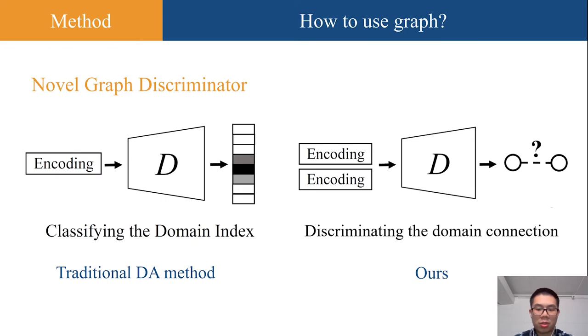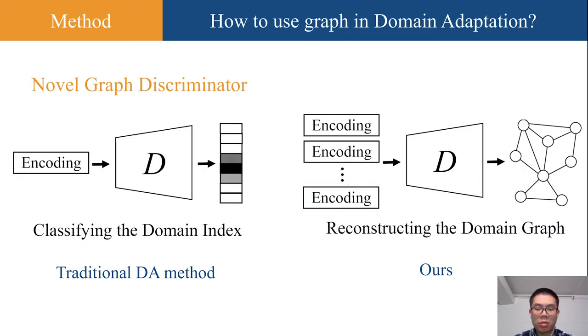This is challenging because the graph discriminator will take encodings from multiple domains and then conduct graph learning tasks. By discriminating the connection, our discriminator can finally reconstruct the domain graph.